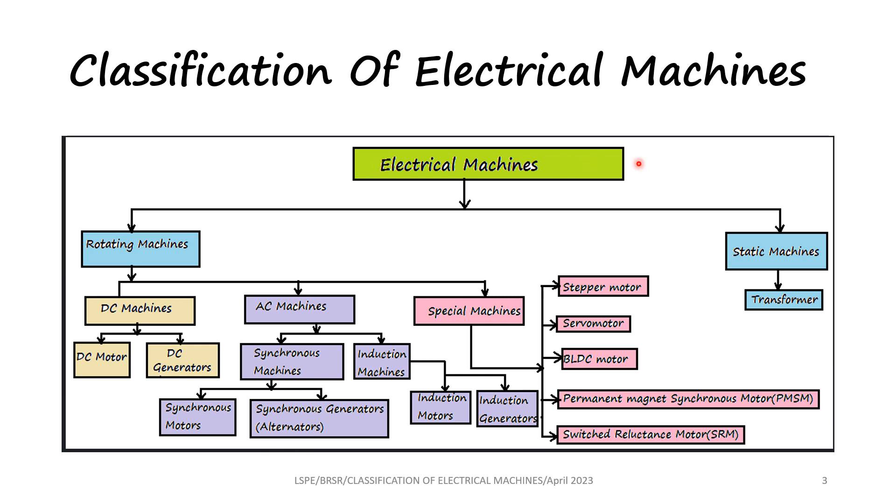Electrical machines are classified into two broad major types. One is rotating machine, other one is a static machine. By rotating machine, as the name says, it has moving parts. By static machine, it doesn't have any moving parts.